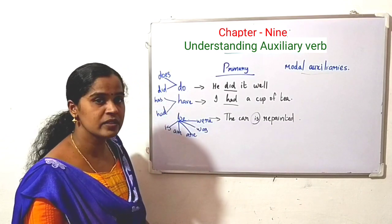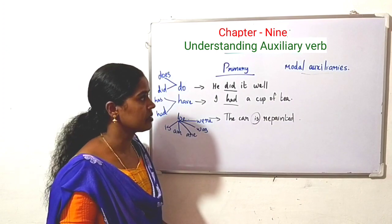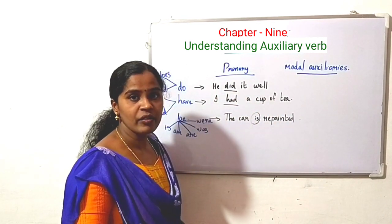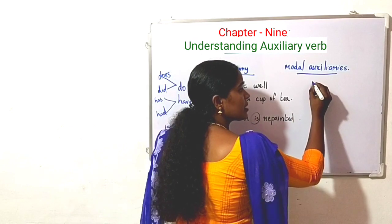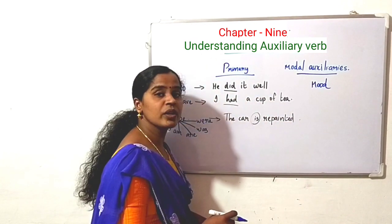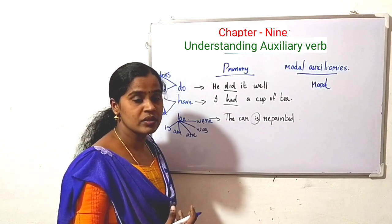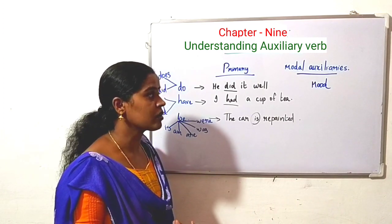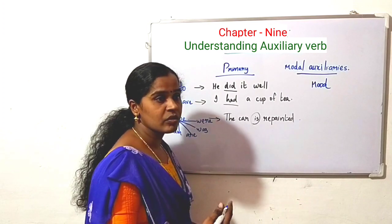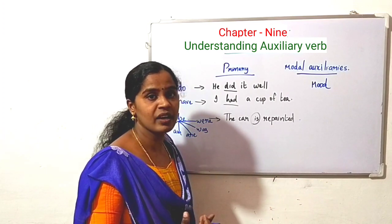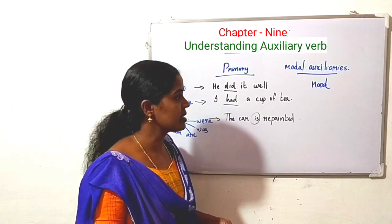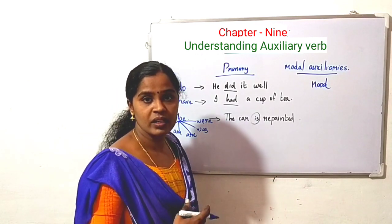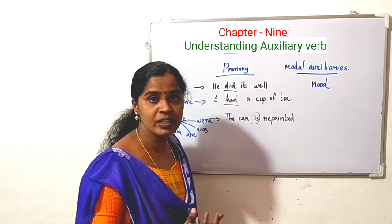That is the difference primary auxiliaries have with modal auxiliaries. Now we can see the next category: modal auxiliary. The word 'modal' is derived from the word 'mood.' Different moods refer to different emotional feelings. In grammar, the function of modal auxiliary is to express the mood or emotional feeling of the sentence — the emotion which is shared by the sentence.